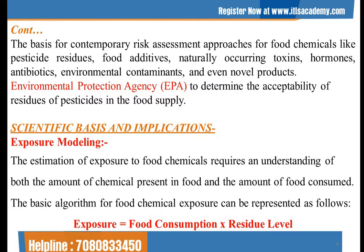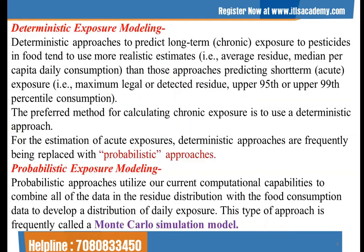The basic formula for food chemical exposure can be represented as: Exposure = Food Consumption × Residue Level. Deterministic exposure modeling approaches to predict long-term exposure to pesticides in food tend to use more realistic estimations than those predicting short-term exposure. The preferred method for calculating chronic exposure is to use deterministic approaches.